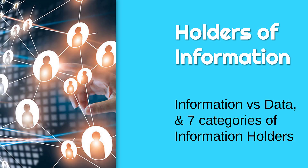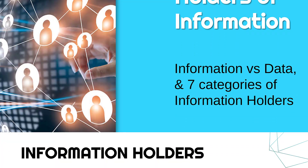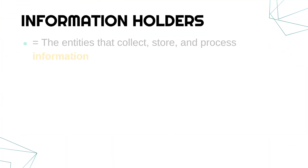This video is the start of many on information, studying it from an IT perspective. We're going to start by looking at seven different categories of information holders. An information holder is an entity that collects, stores and processes information. An entity could be a person, it could be an organisation — it can be anything.